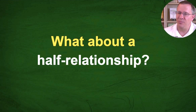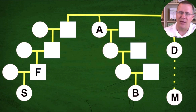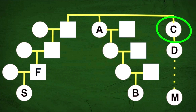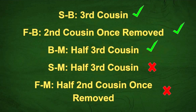Typically I would agree you should consider this, but we need to go back and take a look at this map and where this half-relationship could be. C could be a half-sibling of A and the great-grandfather, and if that was the case, then we would have a few little changes to make. As far as relationships: S and B would still be third cousins, F and B would still be second cousins once removed, B to M would now become a half-third cousin, and F to M would become a half-third cousin — which means F to M would be a half-second cousin once removed. The check marks and X's indicate who shares DNA and who doesn't, and this still works because half-third cousins don't have to share DNA, but they can share DNA.